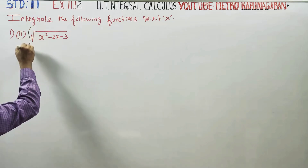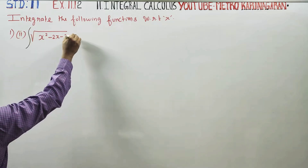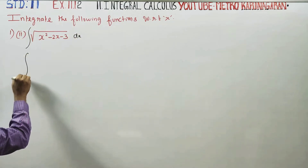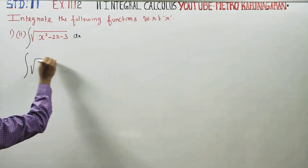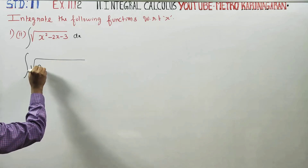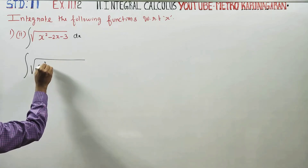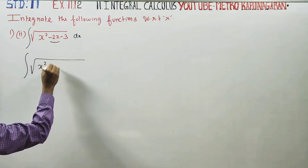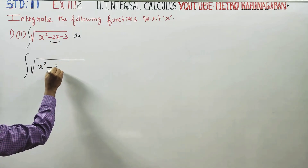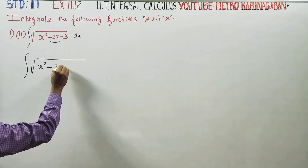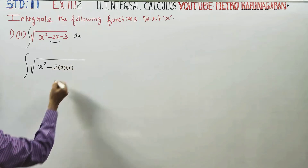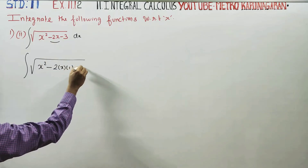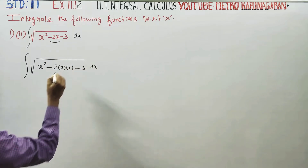Integration of square root of x squared minus 2 times x times 1, with 2 ones are 2, then minus 3, dx.